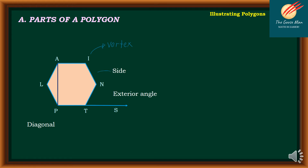Next, we have the line segment IN as a side. We also have what we call the interior angle — an angle inside the polygon. The line segment AP connects two non-consecutive vertices, so we call this the diagonal. Then we have the exterior angle — an angle outside the polygon.